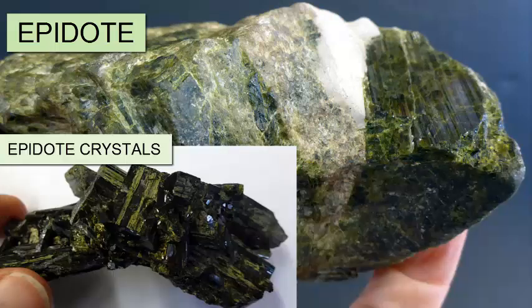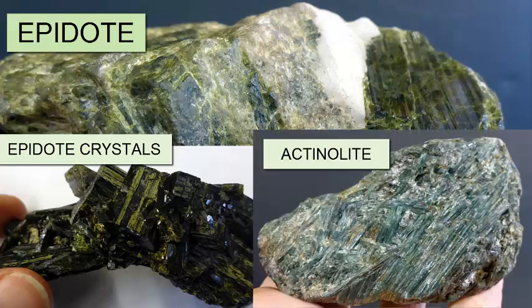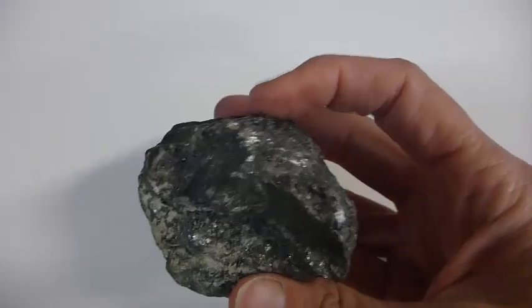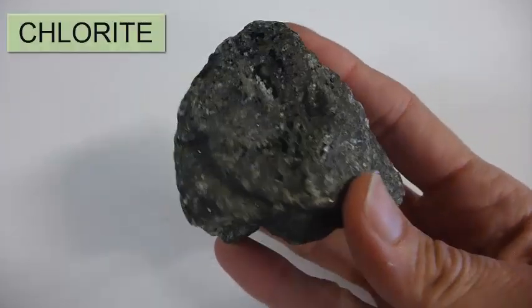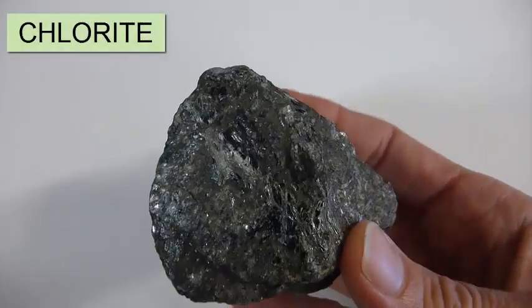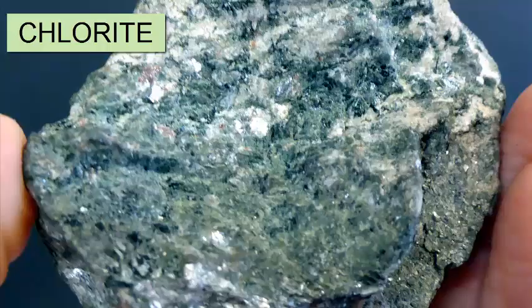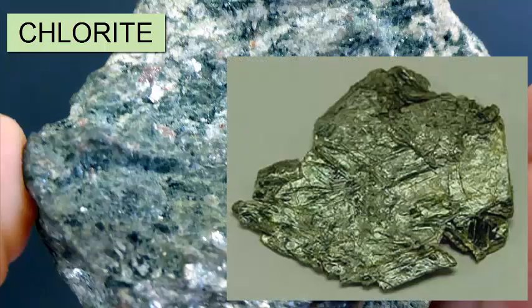Sometimes epidote shows up as long, flat prisms. When that happens, it's easier to confuse it with actinolite. But when you see them side by side, you see the different shape of the prisms. The green mineral that is flaky is chlorite. It is typically found as small crystals, usually too small to see with the naked eye. It is very similar to a mica, but the single cleavage plane flakes are not flexible.